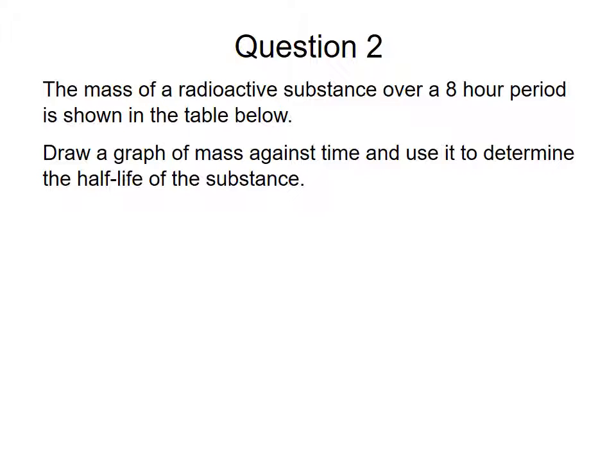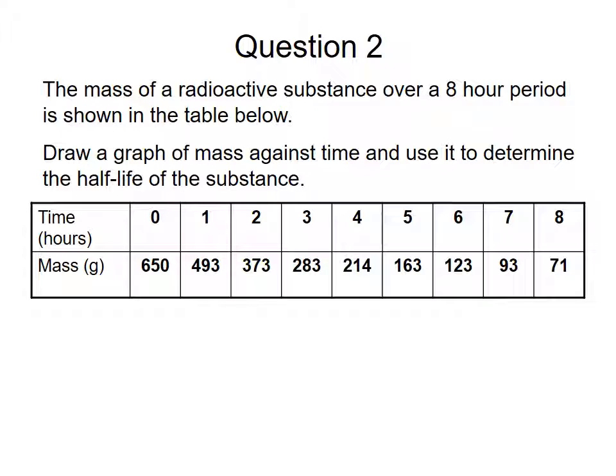Question 2. The mass of a radioactive substance over an 8-hour period is shown in table below. Draw a graph of the mass against time and use it to determine the half-life of the substance. I'll leave that to you to do. So you should find the answer to be about 2 hours.